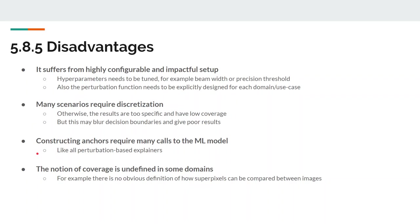Constructing anchors require many calls to the machine learning model, just like all perturbation-based explainers. While the algorithm uses multi-armed bandits to minimize the number of calls, its runtime still very much depends on the model's performance and is therefore highly variable.